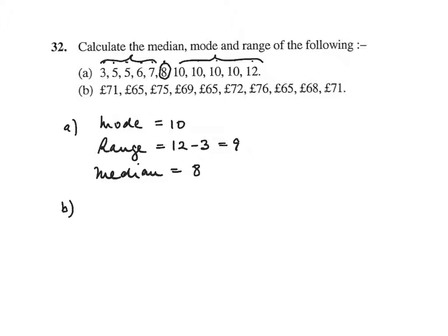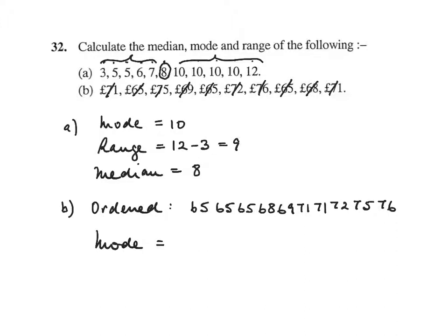Now this data is not ordered, so we'll need to order it. The smallest number is 65, so we've got 65, 65, 65, 68, 69, 71 and 71, 72, 75, 76. Now we can do the same thing as we did above. The mode is the one that occurs most often, and you can see that we have 3 65s. The range - that's the highest number take away the lowest number. So 11. And the median is the middle number.